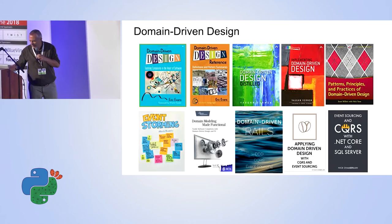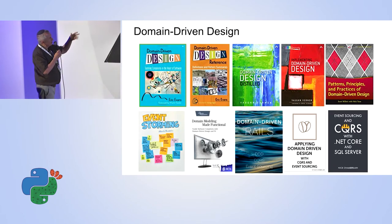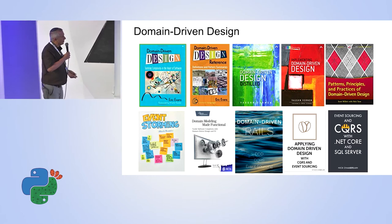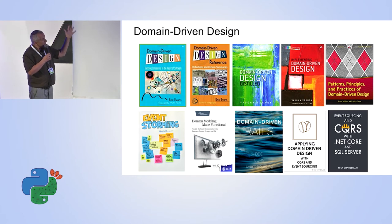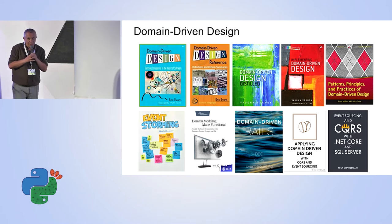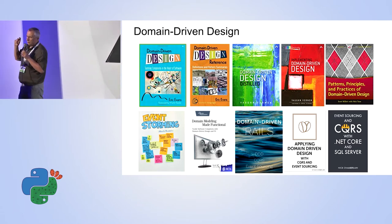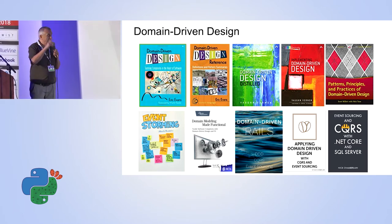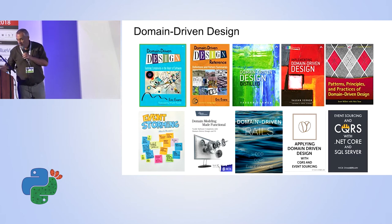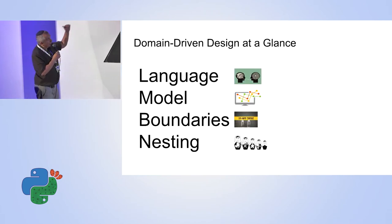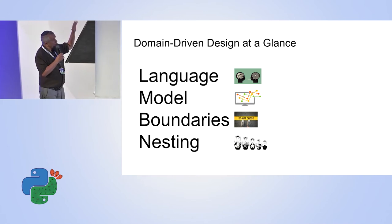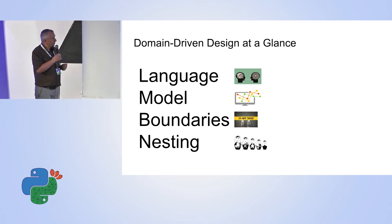I decided to pick up my favorite organizing principle: domain-driven design. The first book was published around 2000 by Eric Evans — it's highly advised to read it. It's a large set of books, but the first book is really valuable. I will pick up only two elements I found very important for this research activity: language and boundaries. We won't talk about others due to time limitations.